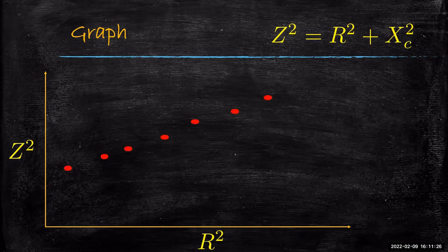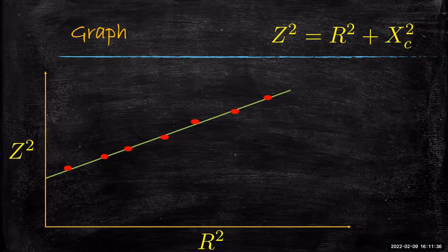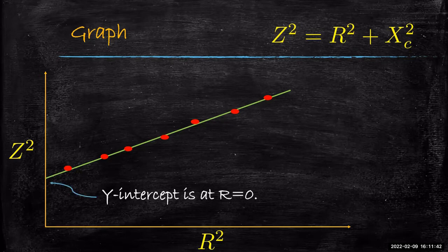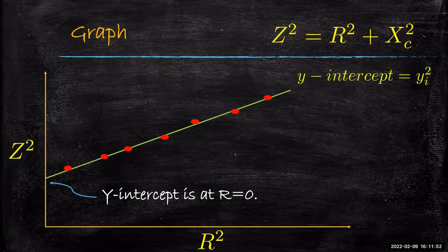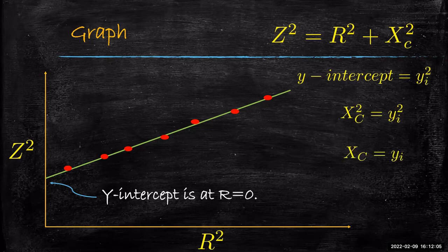The best fit line will not pass through the origin — it will intersect the Z² axis at a particular value. The Y-intercept corresponds to R equal to 0, so the Y-intercept value YI² equals Xc². Therefore Xc = YI, and since Xc = 1/(2πFC), we can say C = 1 / (2πF·YI). This gives us the value of the capacitance C.